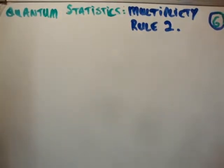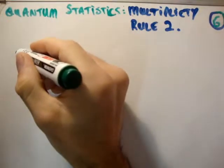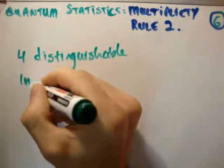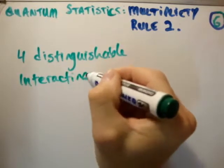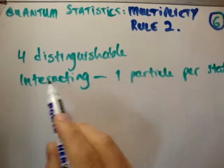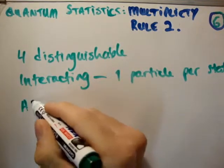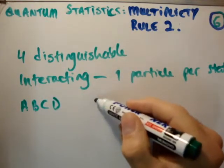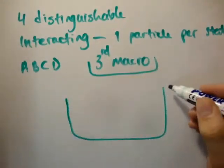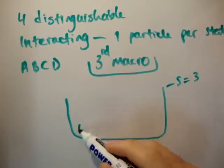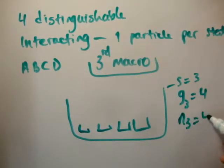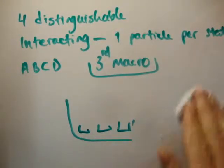Now what I want to do is move on from the previous video. In the previous video we had 4 distinguishable particles. They were interacting, and because they were interacting, there was one particle per state. So we had A, B, C, D, and I said we're going to use the third macro state. This is just to remind you, so we had S equals 3. We had 4 micro boxes, so G sub 3 was equal to 4, and I put 4 particles into it, so N sub 3 was also equal to 4. That's just a very quick reminder.